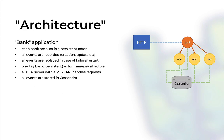In this video we are going to demonstrate a mini bank application where we update people's bank accounts — create them, destroy them, update their balances and so on. We'll design this using actors, Akka HTTP for a server, and Cassandra as a storage system. Each bank account for every person will be a persistent actor that stores all relevant events of that bank account to Cassandra.